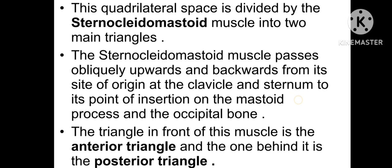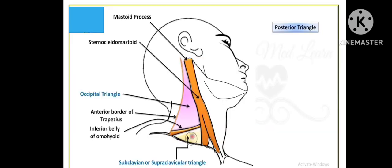The sternocleidomastoid muscle is oblique, running upward and backward. Its insertion is on the clavicle inferiorly and on the mastoid process and occipital bone superiorly. This muscle forms the boundary between the anterior and posterior triangles. These details form the introduction.